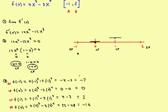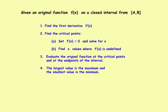So the candidates for maximum and minimum are: f(−1) = −7, f(0) = 0, f(1) = 1, f(2) = −16. Step four: just look at your list. The largest value is the maximum and the smallest value is the minimum.